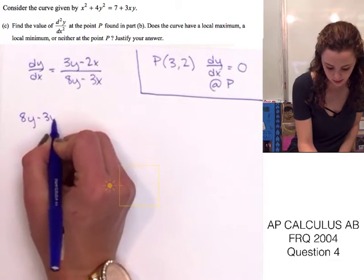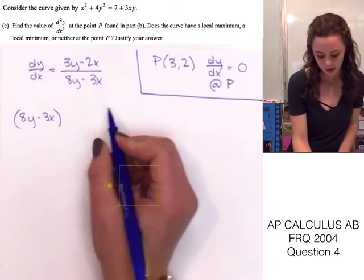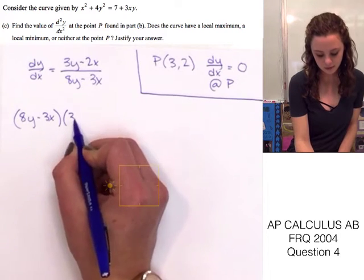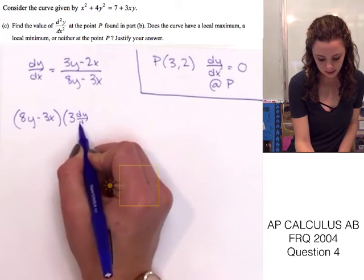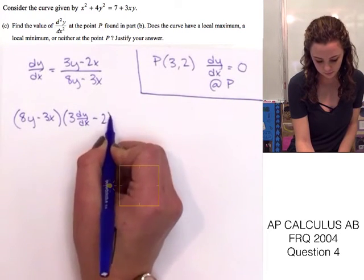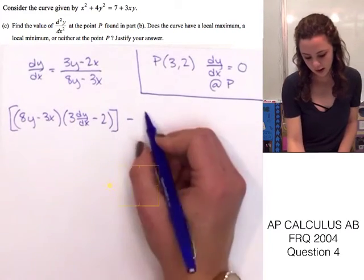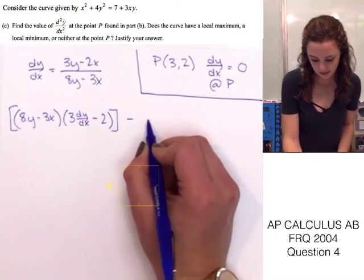so, 8y minus 3x times the derivative of the upper function. So, that's 3 times dy dx minus 2 minus high.